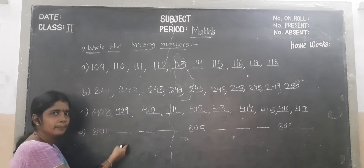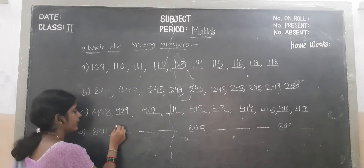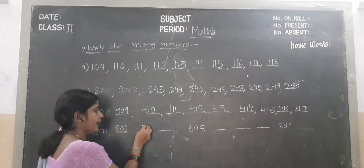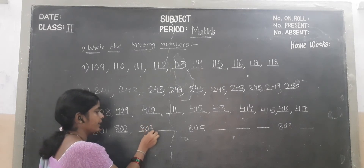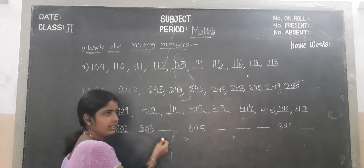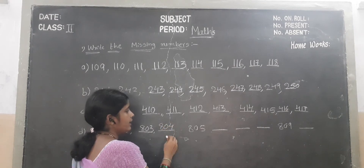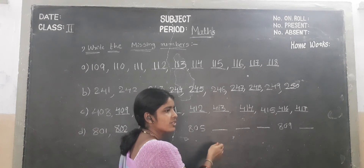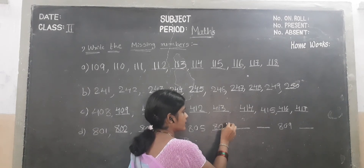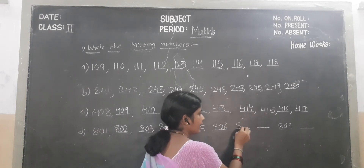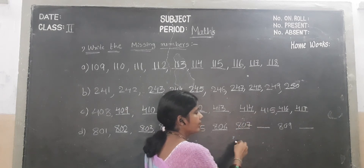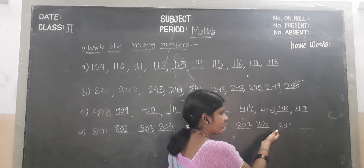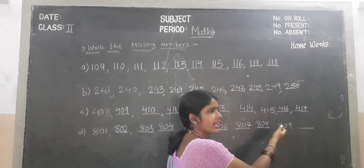Next number 420. Next number 811. Which number will become? 802. Next number 803. Next number 804. Next number is 805. Which number will become children? 806. Next 807. Next 808. 809. Which number will become? 810.